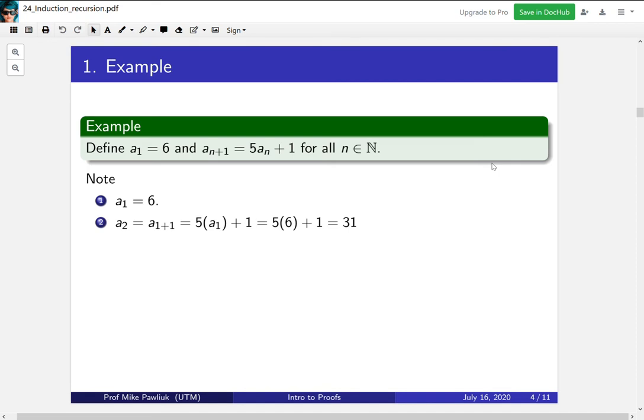So a₁ is equal to 6, that's just given to us, that's our starting point. And now a₂ is a₁₊₁, so the definition tells us n equals 1 here. So I use n equals 1 and this is 5 times a₁ plus 1. And we know what a₁ is already, it's 6. So plugging this all in we get 31. Now can you tell me what a₃ is? a₃ is 5 times a₂ and a₂ is 31. We just computed that.